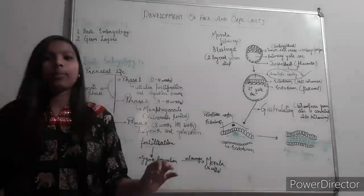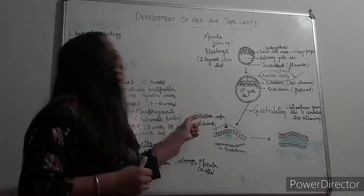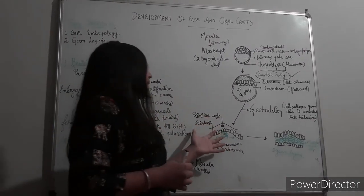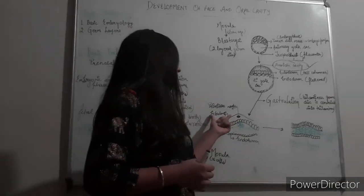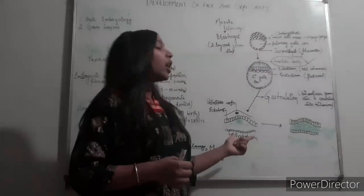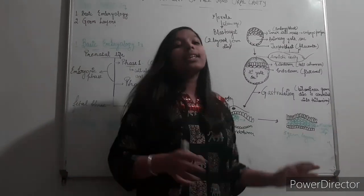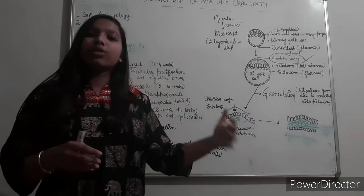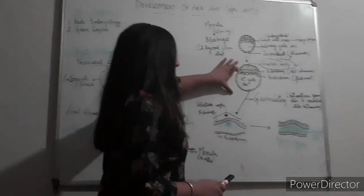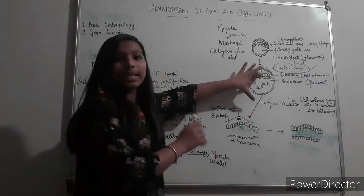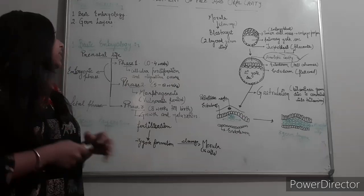At primitive node, ectodermal cells proliferate and migrate in between ectoderm and endoderm and form a layer which is known as mesoderm. These cells aggregate and form mesodermal cells. So at this time, two-layer germ disc is converted into three-layer germ disc. This is the complete formation of germ layers.